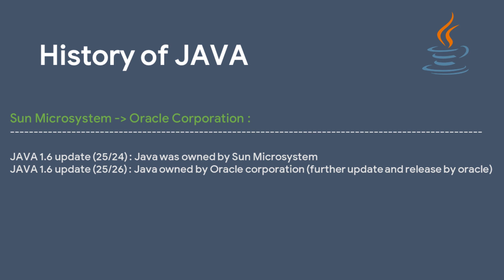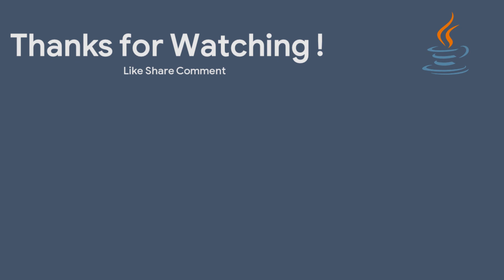One more important thing about the history of Java: from JDK 1.0 up to JDK 1.6 update 24, Java was owned by Sun Microsystems. After JDK 1.6 update 25 onwards, Java was owned by Oracle Corporation. That is all about the history of Java. I hope you liked this video — please subscribe to our channel. Thanks for watching and have a good day.